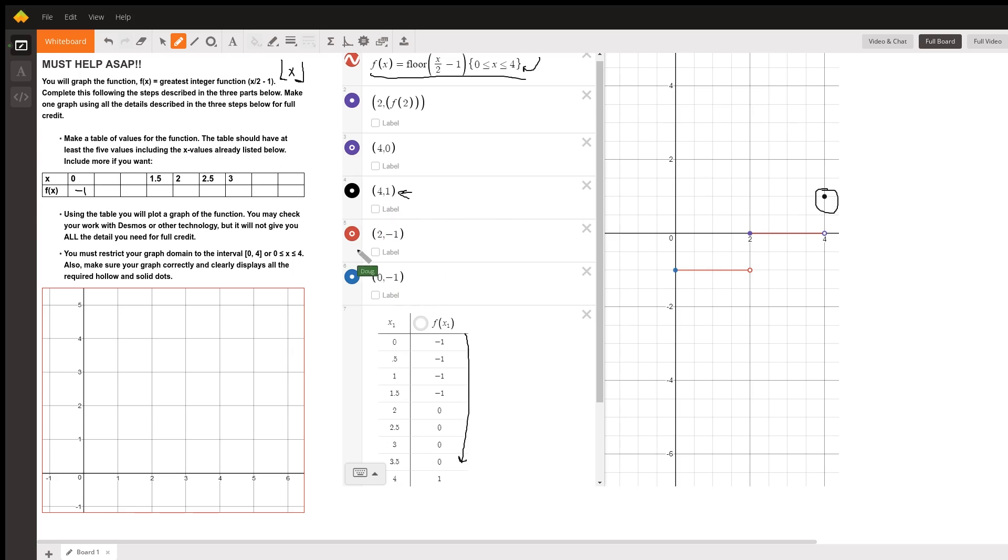And if you're using Desmos, you'll see that there's a way to put an open circle. Which I've done here and here. Because the greatest integer function moves us to the next integer by the time you get to the left-hand point of the next interval.